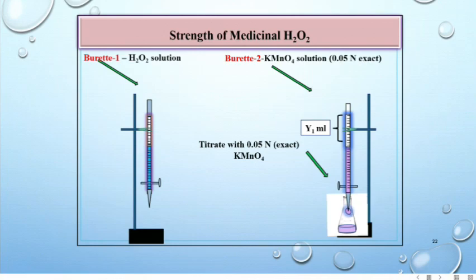Titrate this solution directly with permanganate solution. Stir the solution constantly till permanent faint pink color appears to the solution. This is Y1 ml. Repeat the titration for Y2 ml. For that, in the same solution add 1 ml H2O2 solution from burette number 1 and continue the titration with permanganate solution, then repeat the titration for Y3 ml.